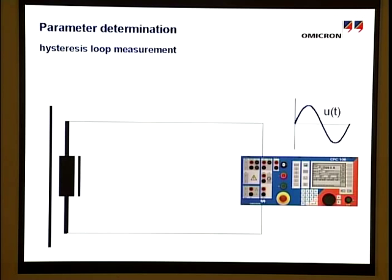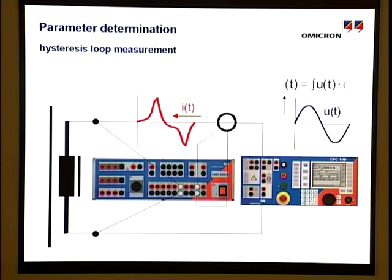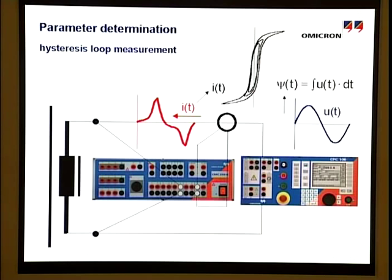The non-sinusoidal current and the voltage are measured by the CMC256 via its analog inputs. When overlapping the magnetic flux derived from the voltage via integration and the measured magnetizing current point by point, the hysteresis loop for a specific voltage is obtained. By increasing the voltage until distinct saturation, the saturation hysteresis loop can be measured. For this, voltages up to 2000 volts are required.